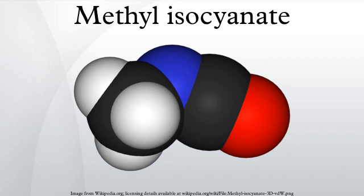MIC also reacts with itself to form a trimer or higher molecular weight polymers. In the presence of catalysts, MIC reacts with itself to form a solid trimer, trimethyl isocyanurate, or a higher molecular weight polymer. Sodium ethoxide, triethylphosphine, ferric chloride and certain other metal compounds catalyze the formation of the MIC trimer, while high molecular weight polymer formation is catalyzed by certain trialkylamines. Since the formation of the MIC trimer is exothermic, the reaction can lead to violent boiling of the MIC. Since catalytic metal salts can be formed from impurities in commercial grade MIC and steel, this product must not be stored in steel drums or tanks.